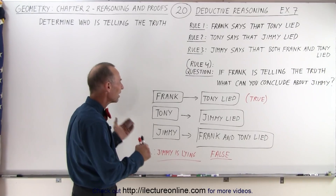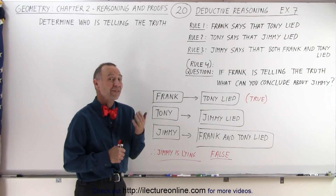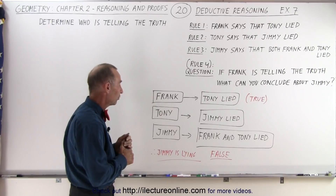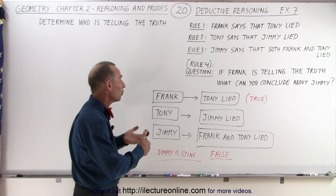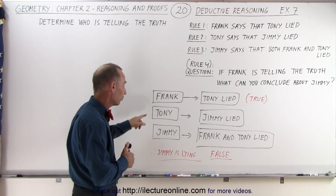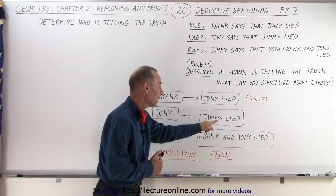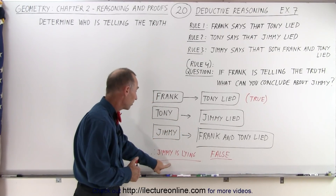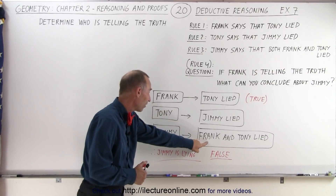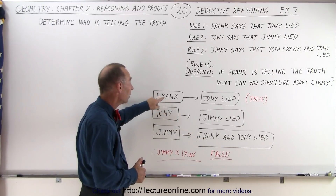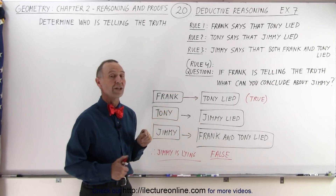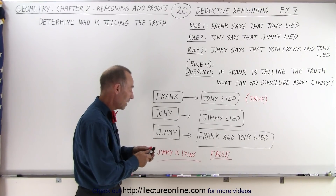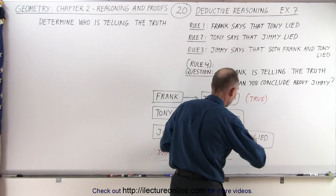So now what can we say about Tony, even though we're not specifically asking whether Tony is telling the truth or lying as well? Tony claims that Jimmy is lying, and now we've established that Jimmy is lying — because he claims that Frank is lying, when we know that Frank is telling the truth. So therefore, it would appear that Tony is also telling the truth.